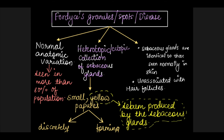That is the reason we can see sebaceous glands present in the oral cavity. This is actually a normal anatomic variation and it is seen in more than 80% of the population. These sebaceous glands are actually identical to those seen normally in the skin, but the difference is that they are unassociated with hair follicles.